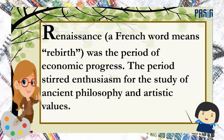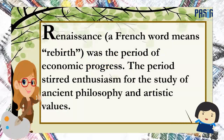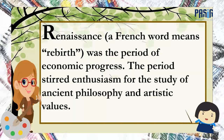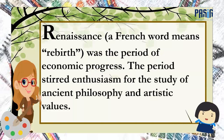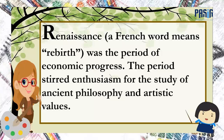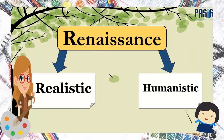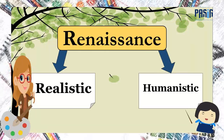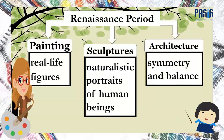Now let's start our lesson about the arts during the Renaissance period. Renaissance, a French word meaning rebirth, was the period of economic progress. The period steered enthusiasm for the study of ancient philosophy and artistic values. Italian Renaissance began in the late 14th century. It was an era of great artistic and intellectual achievement with the birth of secular art. The focus was on realistic and humanistic art.